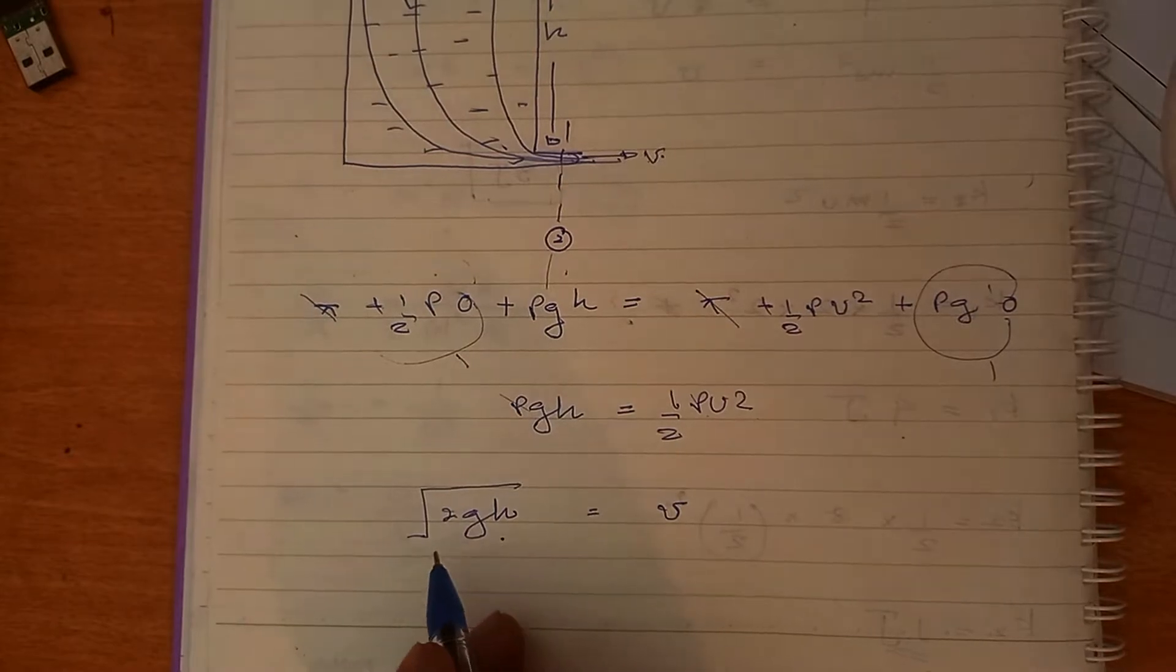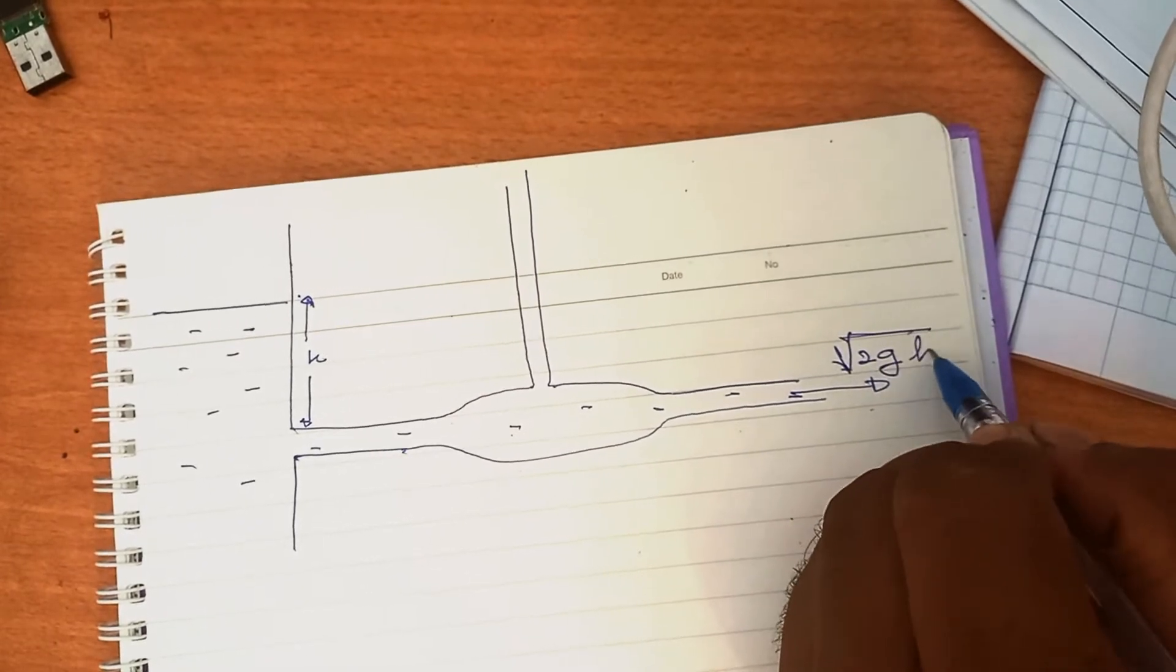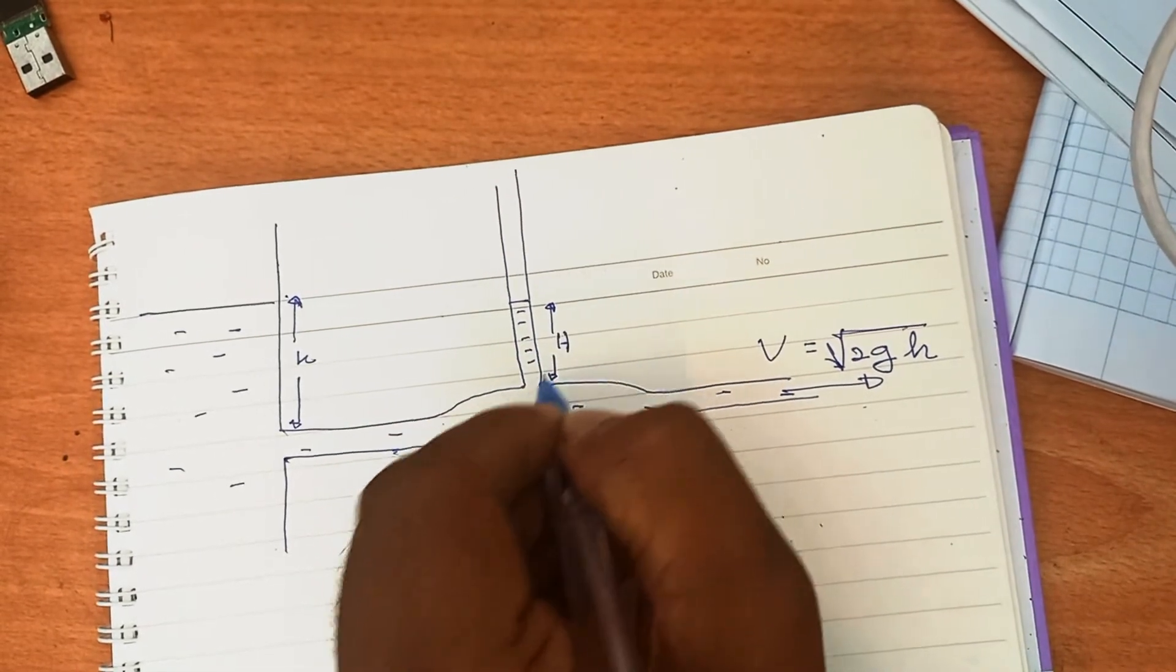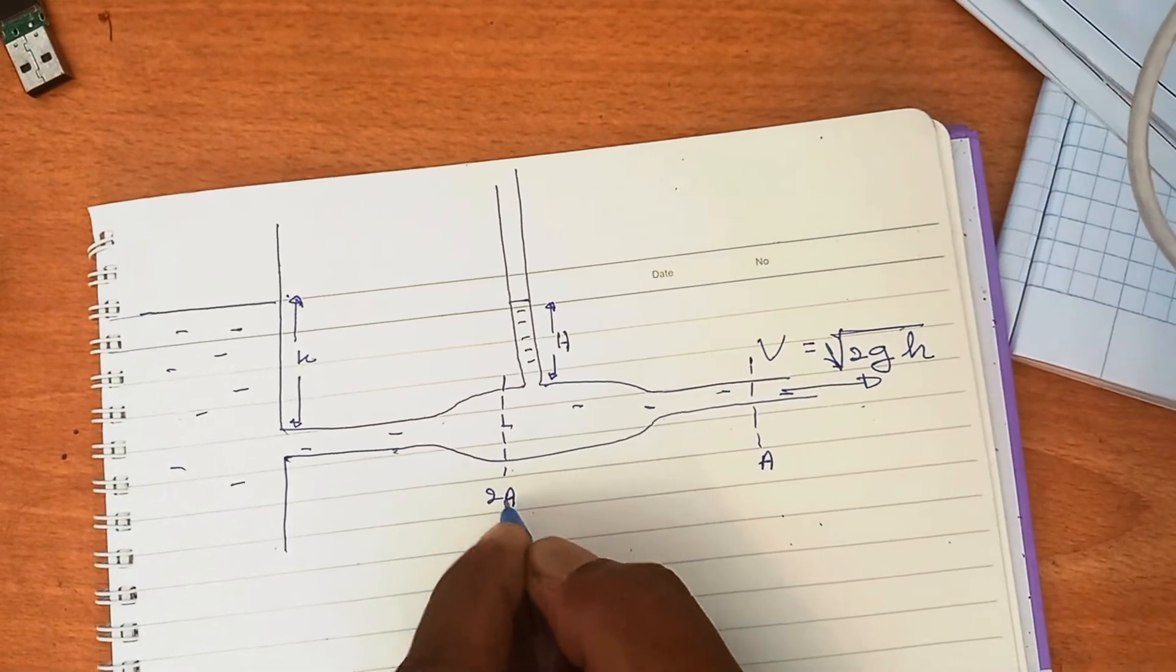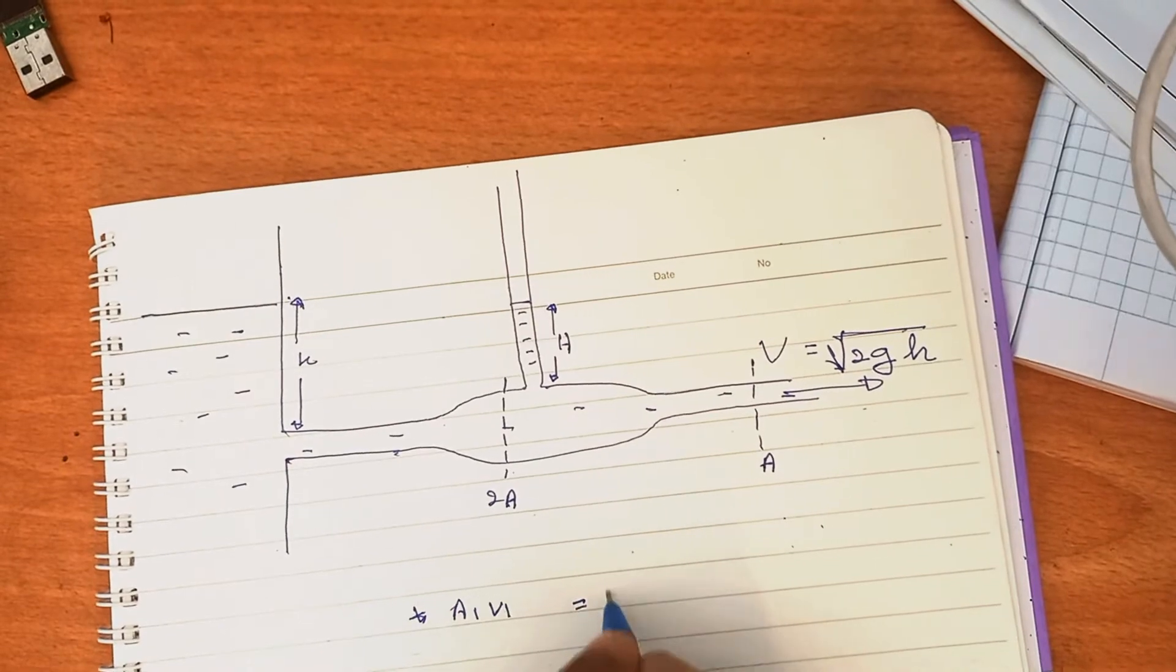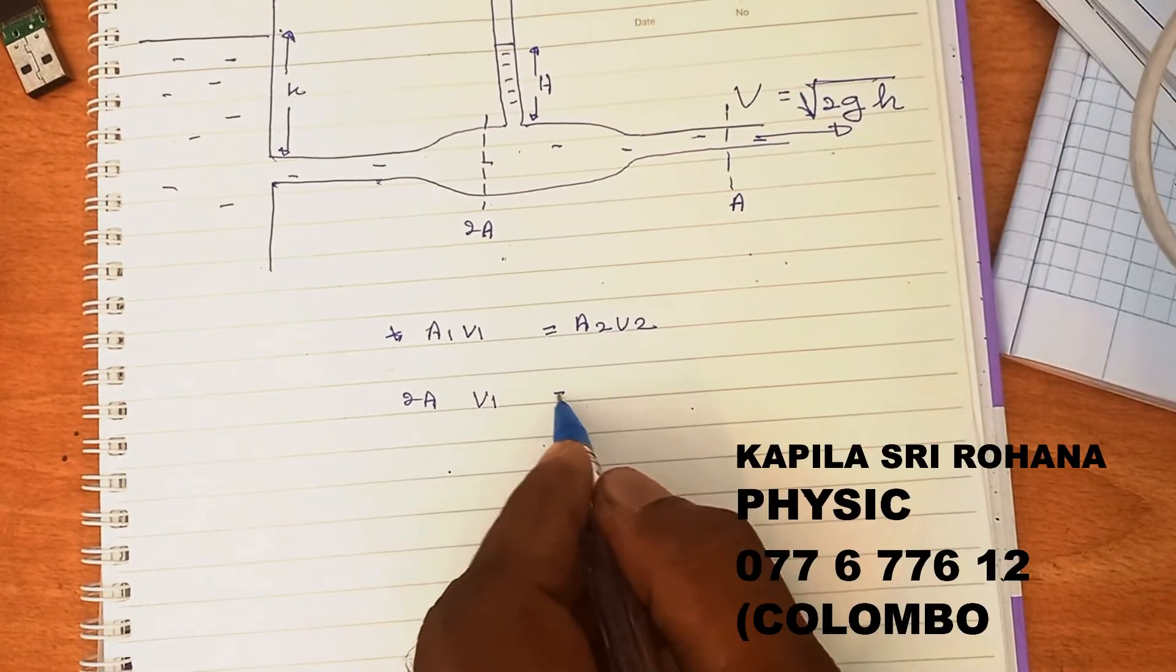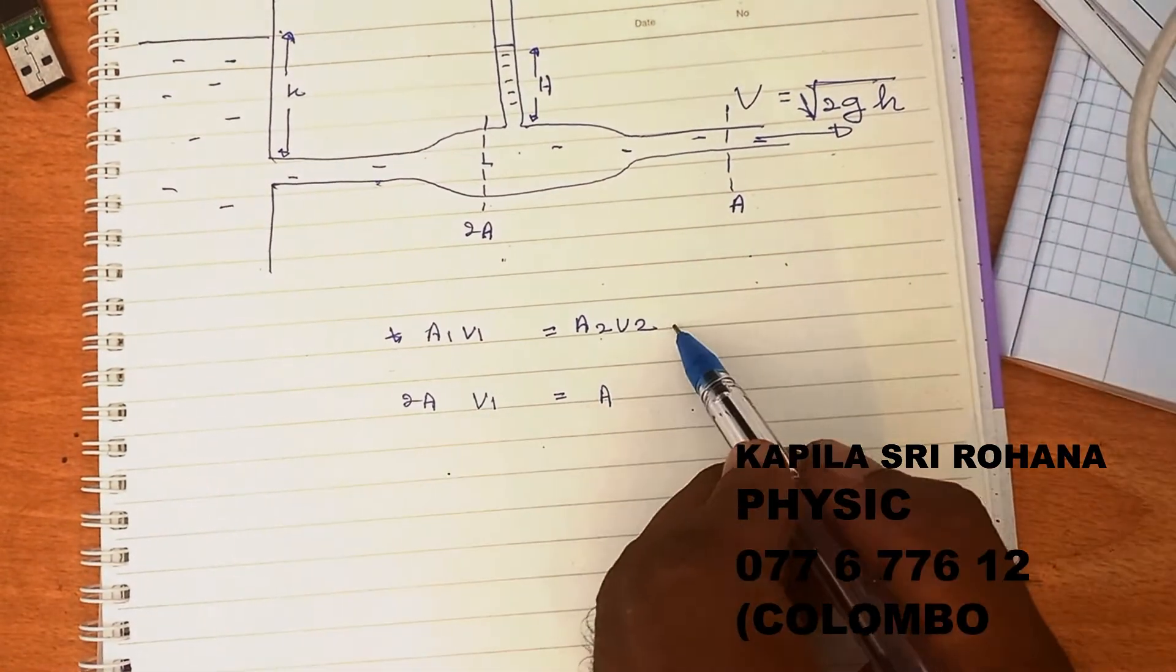According to this derived expression, ejecting speed of water is √(2gh). You have to find this height capital H. Cross sections A and 2A according to the question. Apply continuity equation: A₁V₁ = A₂V₂. 2A·V₁ = A·V₂ = A√(2gh), so V₁ = √(2gh)/2.